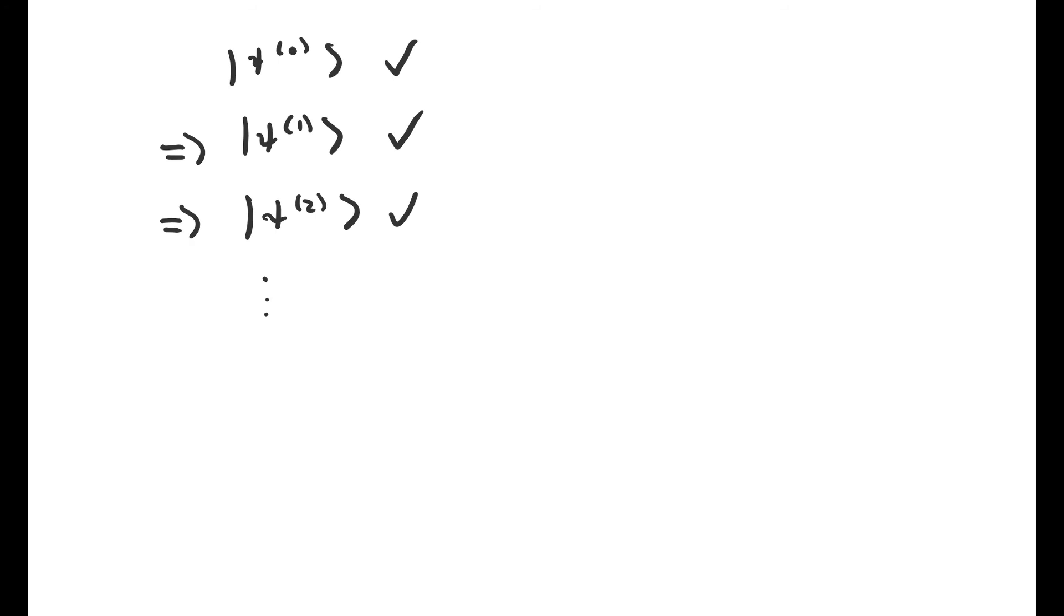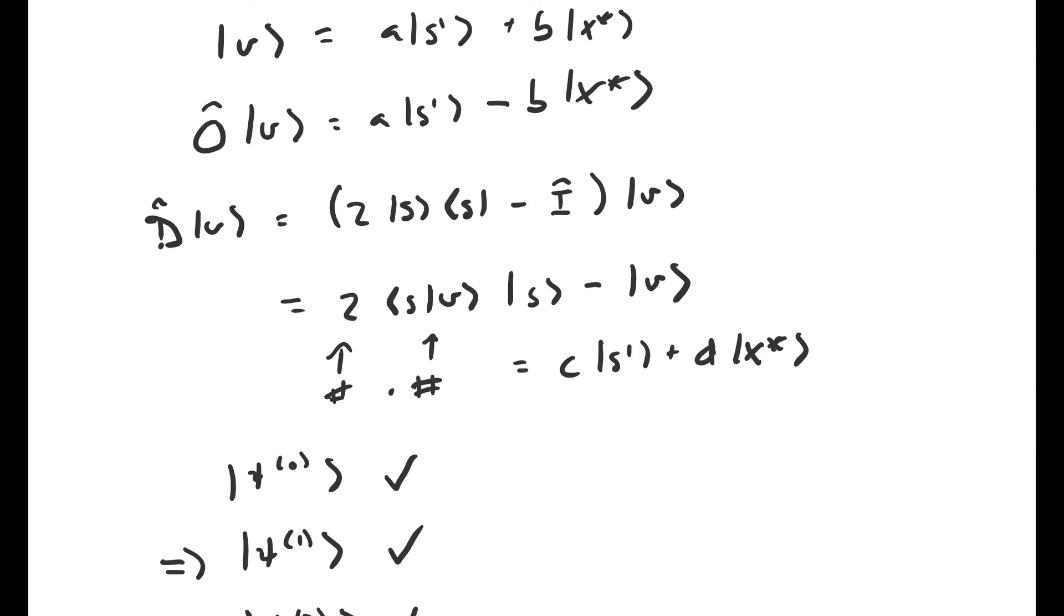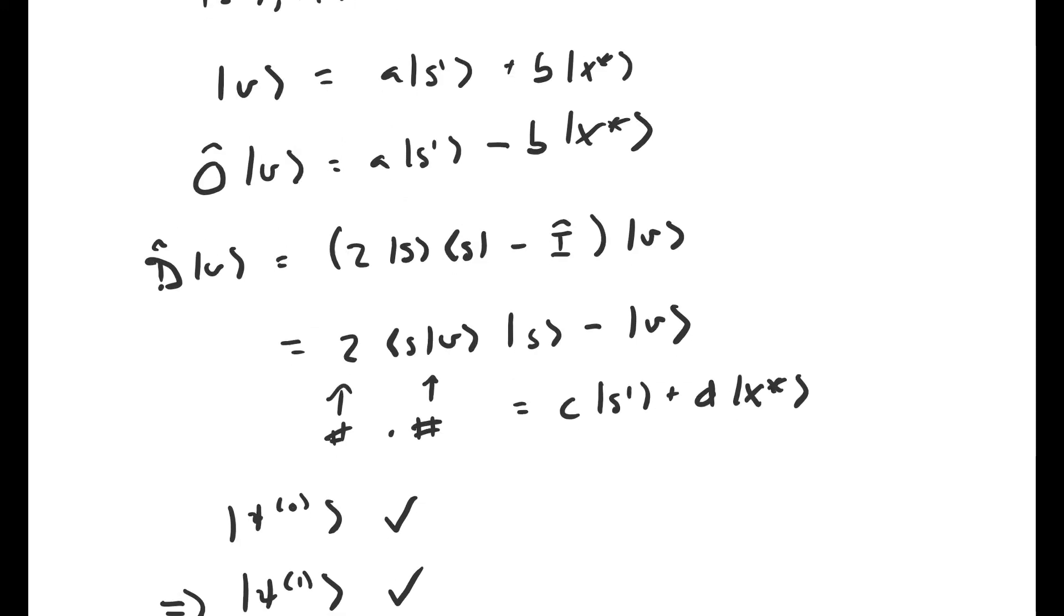Not only is this subspace two-dimensional, but it's also a vector space over the real numbers. You can go back and rerun the argument I just gave, but this time let v be an arbitrary vector that can be expressed as a linear combination of s prime and x star with real coefficients.